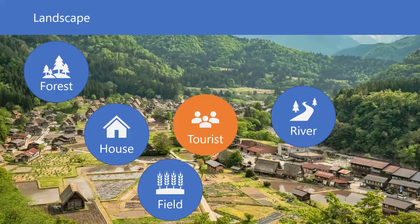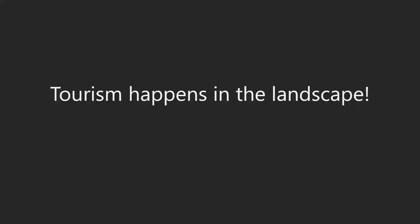Even this photograph is taken from an observatory spot where tourists visit, so this landscape is also seen and enjoyed by tourists. From that we can say that tourism happens in the landscape — in other words, tourism is dependent on the landscape. This is a very important idea in tourism studies.